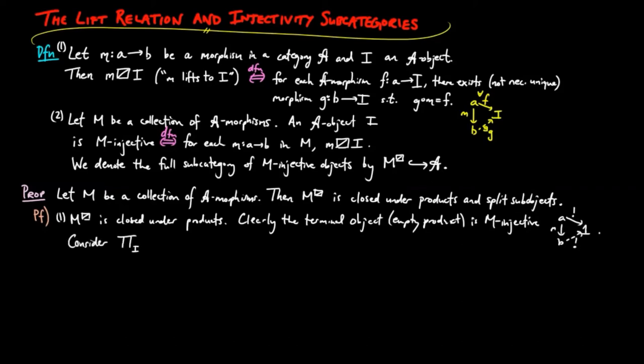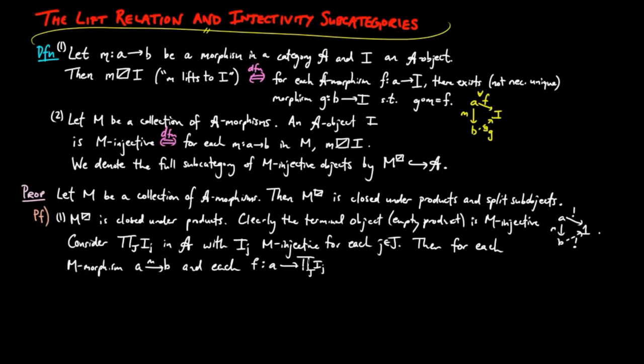Consider an arbitrary non-empty product of M-injective objects I_J. Then, for each M-morphism M and each A-morphism F from A to the product, there exists a morphism G_J from B to I_J, such that G_J M equals π_J F, where π_J is the projection map of the product.